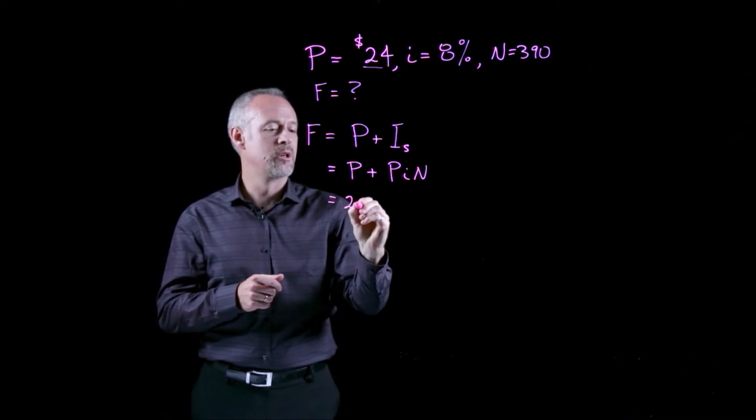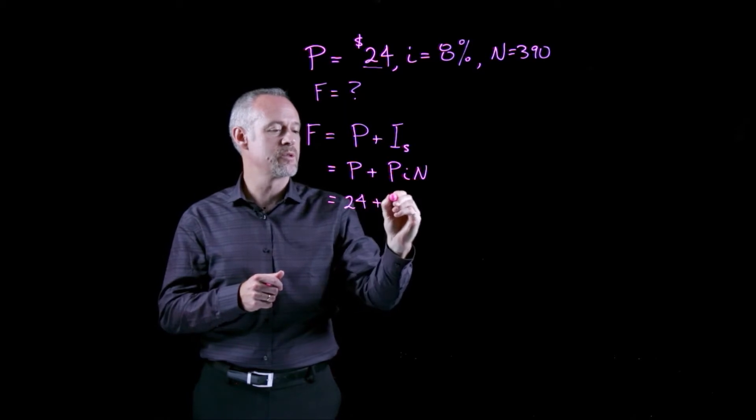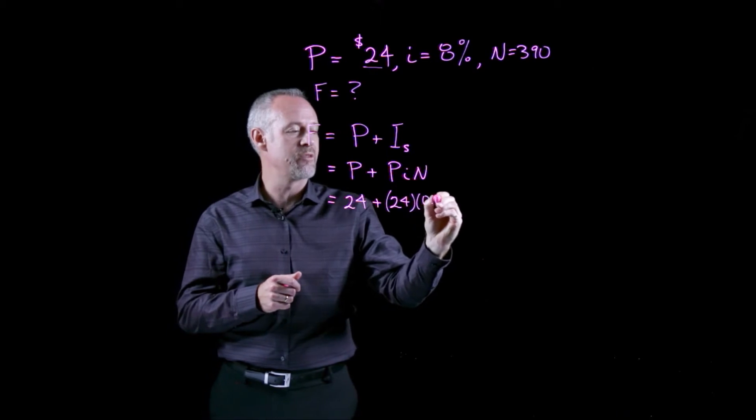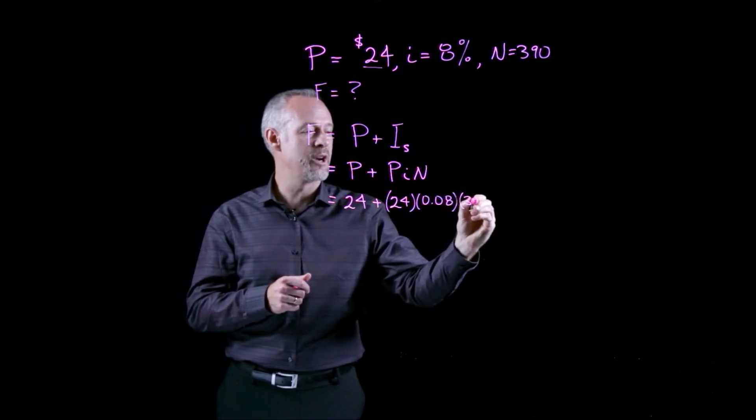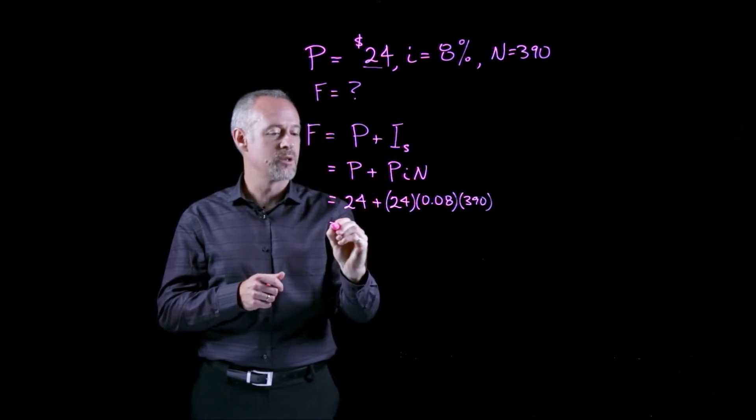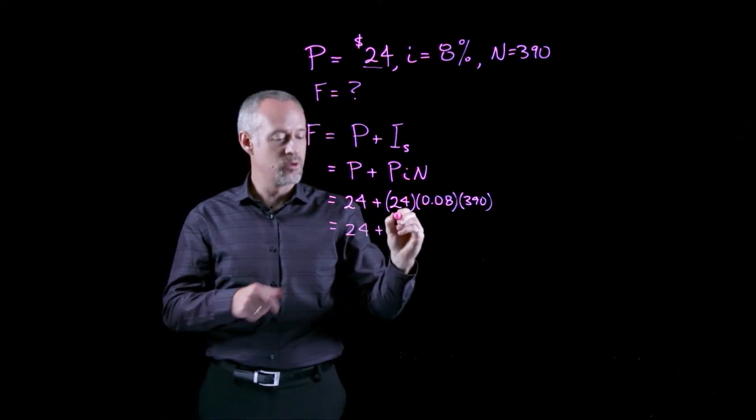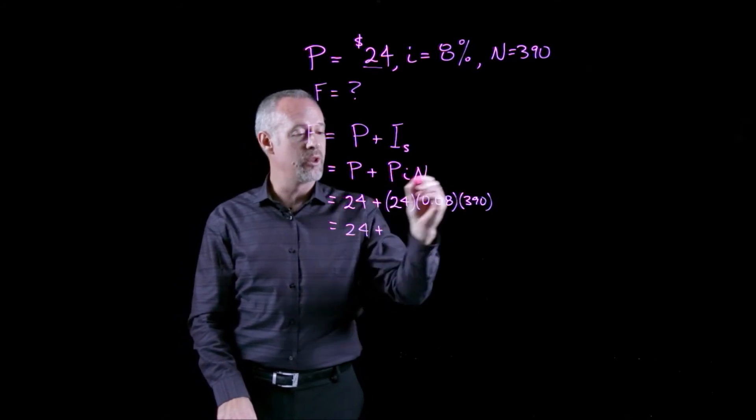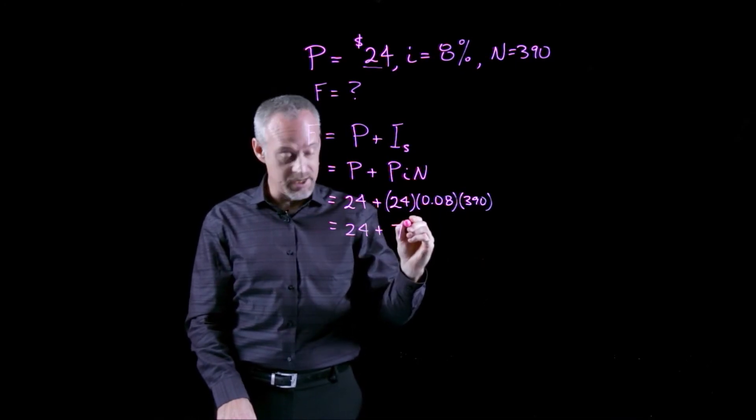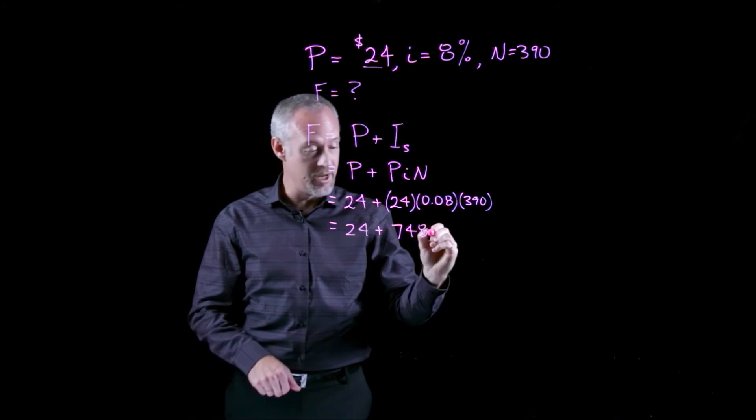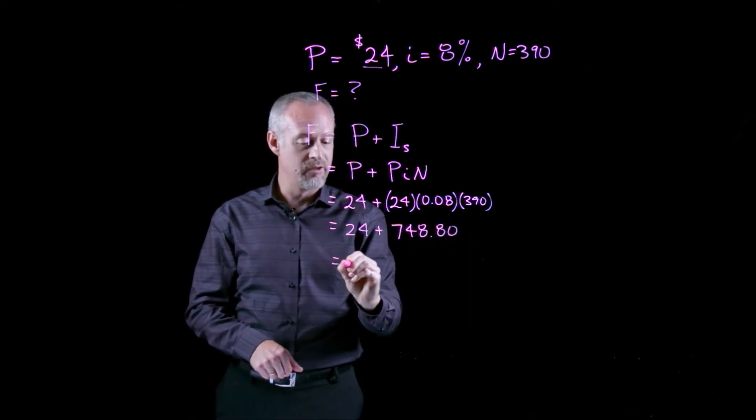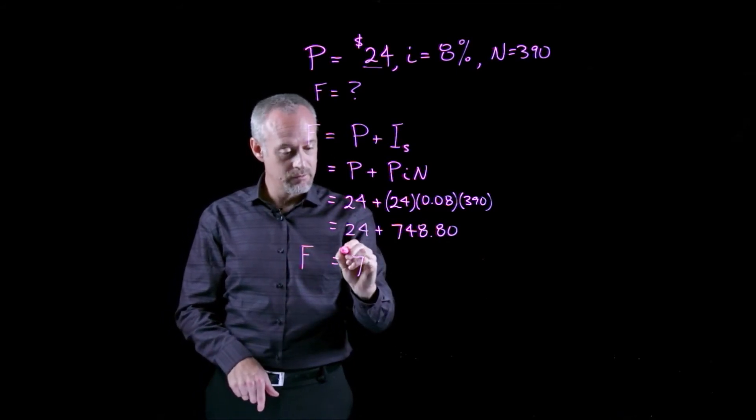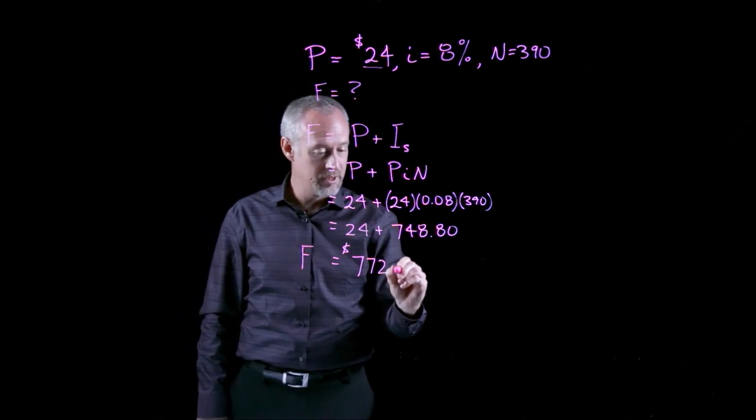And so, for this problem, our initial investment was $24 plus $24 times the interest rate of 8% times 390 years. So, we just work out what that is, $24 plus the accumulated amount of simple interest over those 390 years is $748.80, giving us a total value of the investment of $772.80.